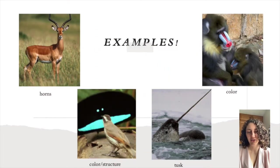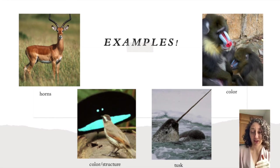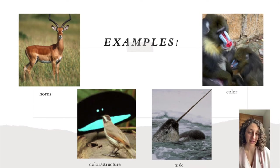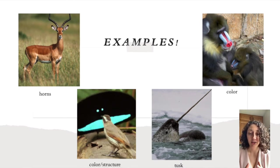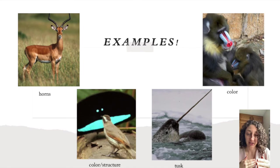Here are some examples of these characteristics and reasons why animals might have them. With impala, the male has horns where the female does not, and this is likely for fighting. They do a lot of male-to-male sparring, which could be because they are trying to fight for a mate or for territory.